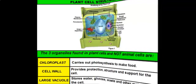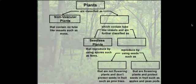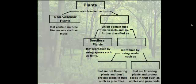So now that we've reviewed the plant cell structures, let's move on to the classification of plants. When we take a look at plants and analyze the kingdom Plantae that they belong to, we see that plants are divided into two major groups. One group is called the nonvascular plants, and the other group is called the vascular plants.